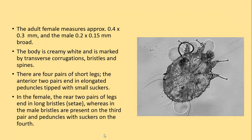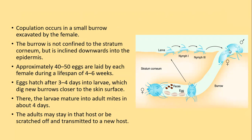The body is creamy white and marked by transverse corrugations, bristles, and spines. Mites carry four pairs of short legs; the anterior two pairs end in an elongated pedicle tipped with small suckers. In females, the rear two pairs end in long bristles or setae, whereas in males bristles are present on the third pair and pedicles with suckers are present on the fourth pair of legs. Copulation occurs in small burrows excavated by the female, which are not confined to the stratum corneum but incline downward into the epidermis.